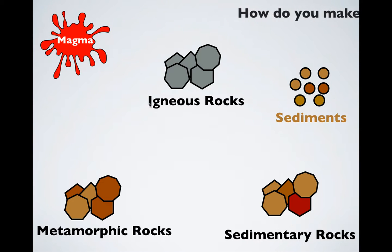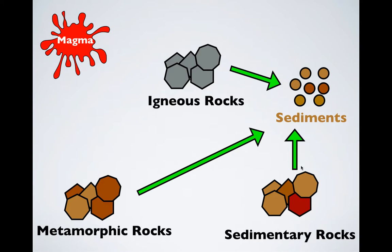So how do you make sediments? I kind of already said it, but you can take any one of these and turn them into sediments. Igneous rock can be weathered away into sediments. Metamorphic rock. And even sedimentary rock, even though it's made up of sediments, if you break down sedimentary rock, now you have the sediments again.